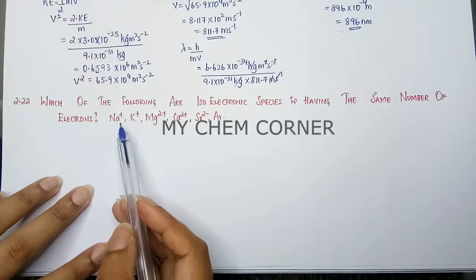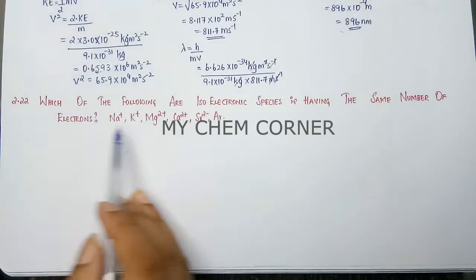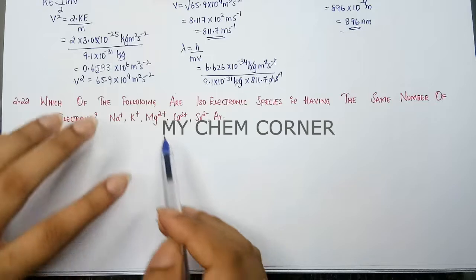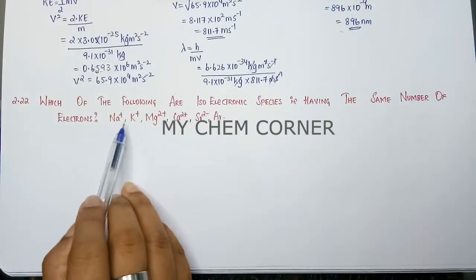Just by looking at these elements you are not going to be able to identify whether they contain the same number of electrons. For that you need to write the electronic configuration and check how many electrons are there, or at least count the electrons.